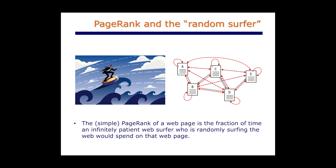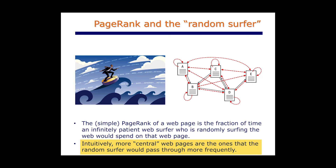...then what page rank is measuring is the average fraction of time that this random surfer — who is infinitely patient — will spend on a particular page. The idea of centrality becomes clearer now because loosely speaking, if a page is more central on the web, then chances are that this person who is randomly surfing through the web is going to pass through that page more frequently.